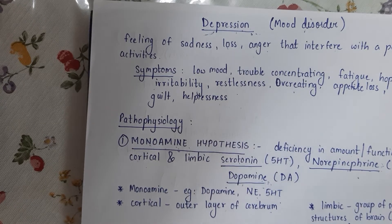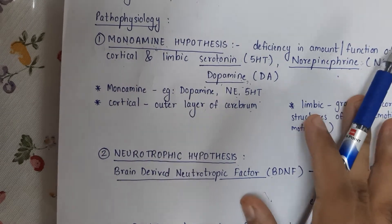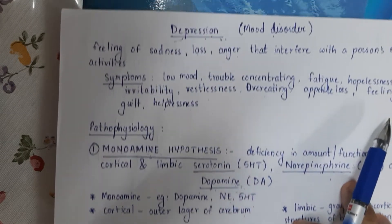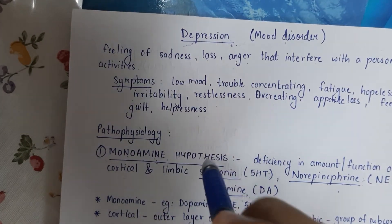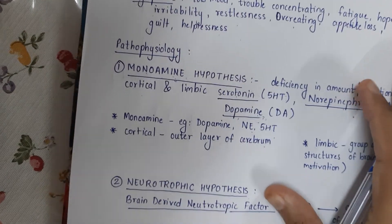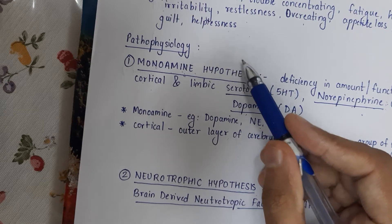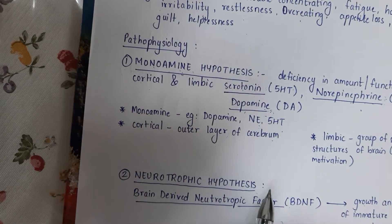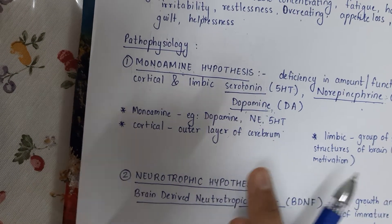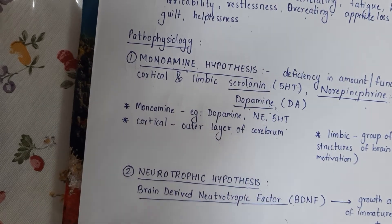Now let's move on to the pathophysiology. For depression or any other psychiatric disorder, the pathophysiology is not certain — it is a hypothesis. For other disorders like stroke, we don't have a hypothesis; we have sure causes. But for psychiatric disorders like depression, Parkinson's, or schizophrenia, we have hypotheses or assumptions because we don't have a clear underlying idea about what exactly is causing it.